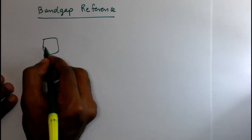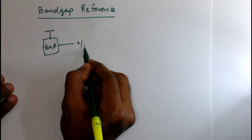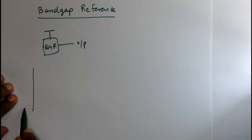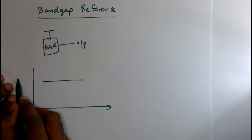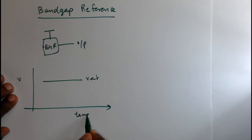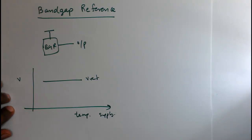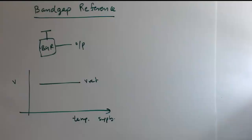Suppose you have a band gap reference — you have a supply voltage to it and this is the output of the band gap reference. Your band gap reference should give an output voltage, called V-Ref. With respect to temperature and supply voltage, that voltage should not vary. So the functionality of the band gap reference is to give a fixed reference voltage which is independent of supply voltage and temperature.